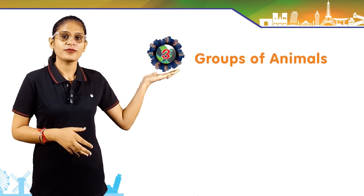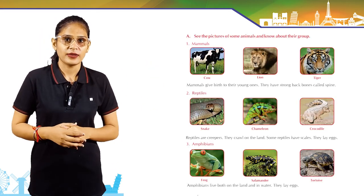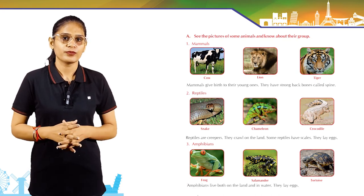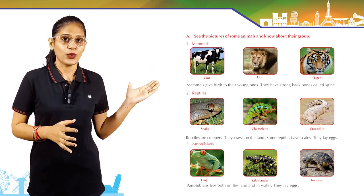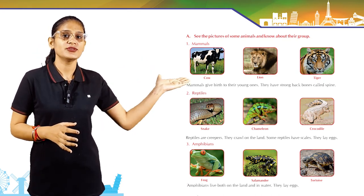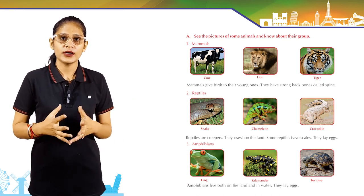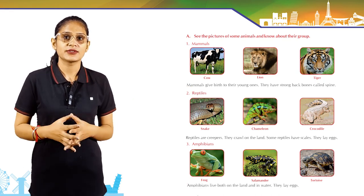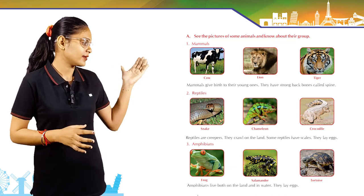Chapter 3: Groups of Animals. See the pictures of some animals and learn about their groups. Look at the first group — mammals: cow, lion, tiger. Mammals give birth to their young ones. They have strong backbones called a spine.